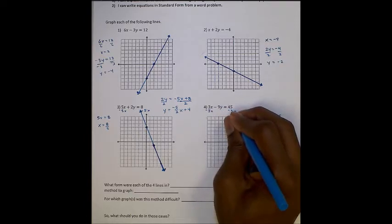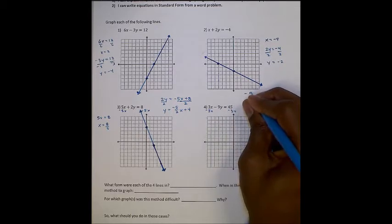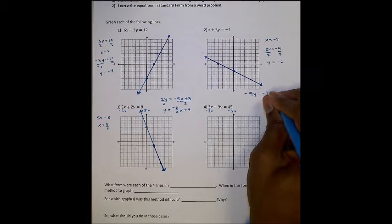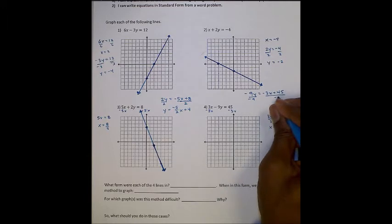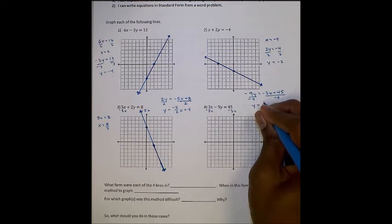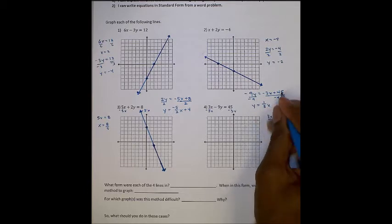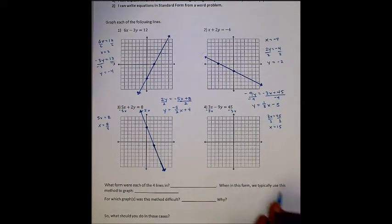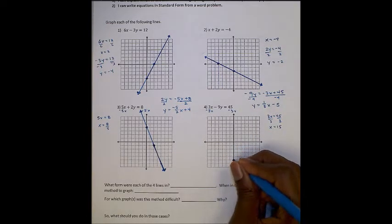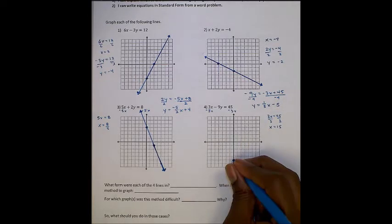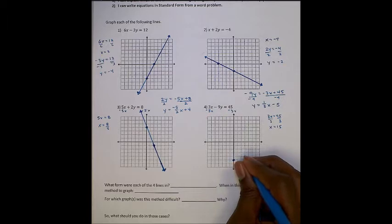That means I'm going to solve for y. Subtract 3x from both sides. So I have negative 9y equals negative 3x plus 45. I'll divide both sides by negative 9. And so y will equal negative 3 divided by negative 9, which will give us positive 1 third x. 45 divided by negative 9, which will give us negative 5.